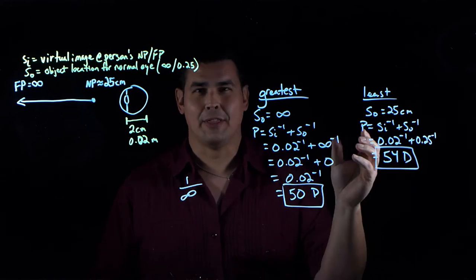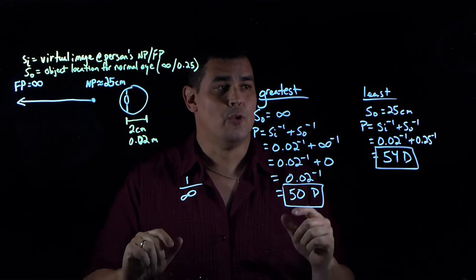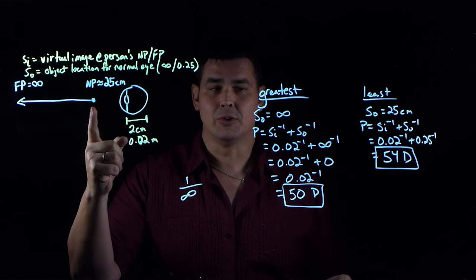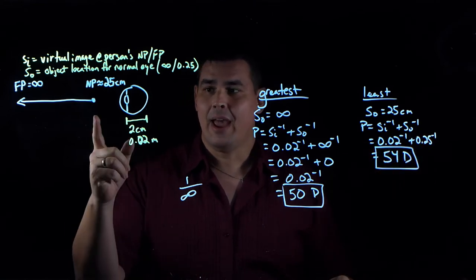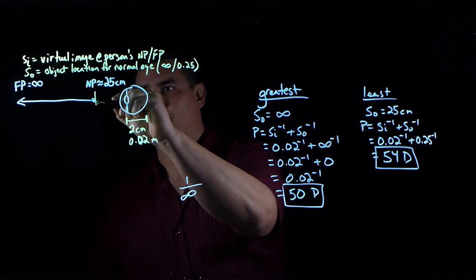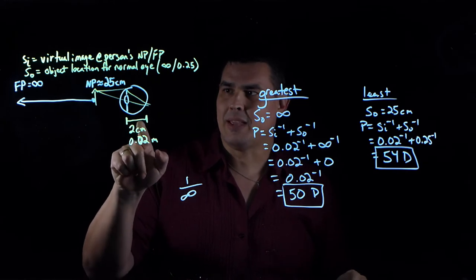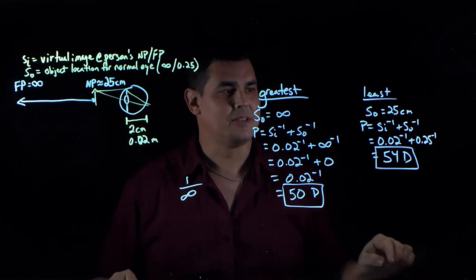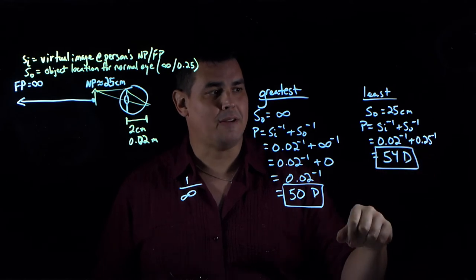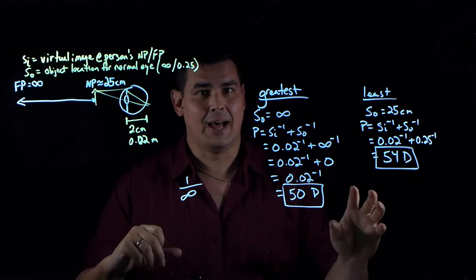For the least distance, normal people see clearly at 25 centimeters, so the object is at 0.25 meters. The image distance is again 0.02 meters, because the image forms on the back of the eye. Solving: 0.02 to the minus one plus 0.25 to the minus one gives 54 diopters. So the power range of a normal eye is 50 to 54 diopters.